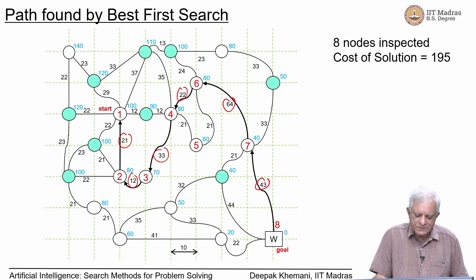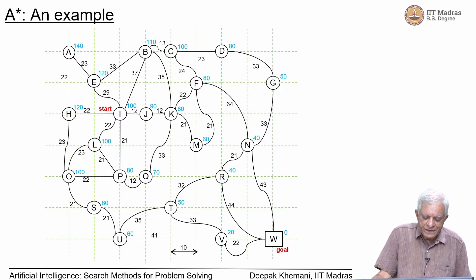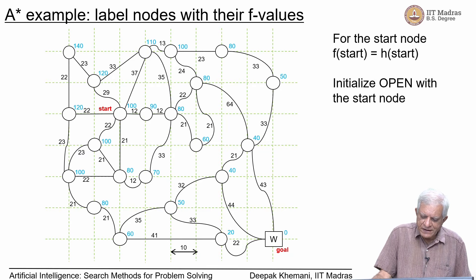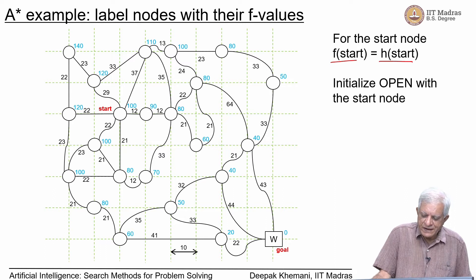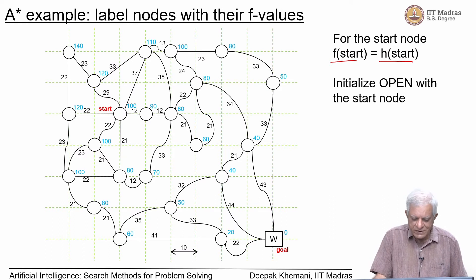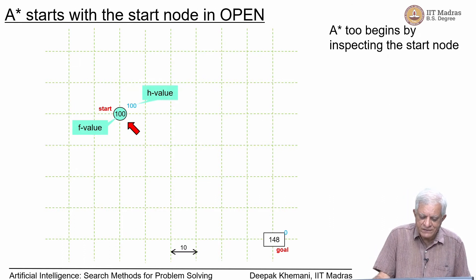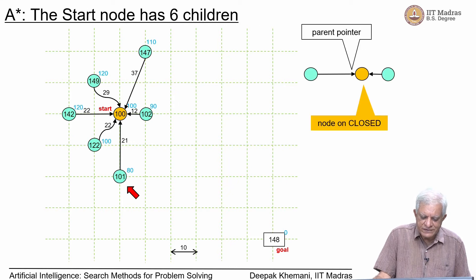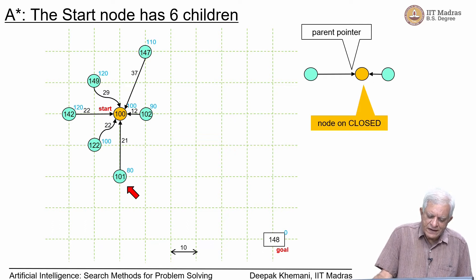Let us now look at how A* performs on the same problem. We will use the same Manhattan distance heuristic values. F of start equals H of start because G of start is 0, and we initialize open with the start node. We start with only the start node; its H value is 100 and its F value is also 100. A* picks the best node — in this case the only node — and generates the 6 children of the start node, then computes their F values.